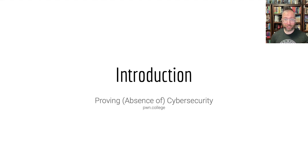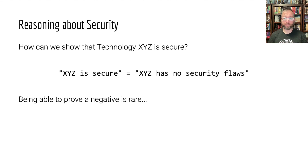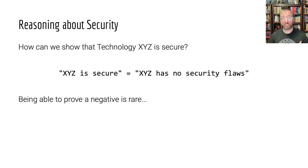We talked about security models, how we might start reasoning about them, a framework for this. But at the end of the day, how do we actually reason about something being secure or not? If we have a technology — some website, some application — that we want to say is secure, another way of stating that is saying it has no security issues, no security flaws, no vulnerabilities. It's very difficult to prove a negative.